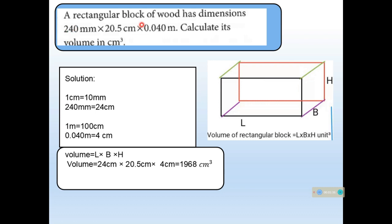A rectangular block of wood has dimensions — all dimensions have been given. Calculate its volume. The formula for calculating the volume of a rectangular block is to multiply all three sides. Convert these sides into centimeters using the given conversion and substitute the values into the formula. The answer is 1968 centimeter cube.